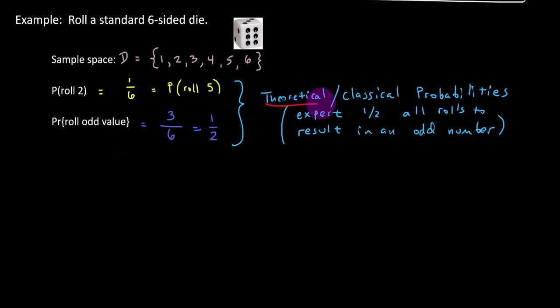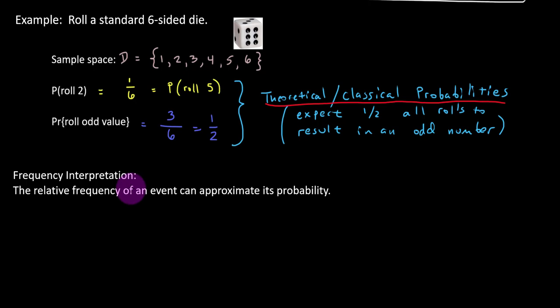Maybe that deserves an underline there. Theoretical or classical probabilities. So let's contrast this example with a frequency interpretation of probability where relative frequency can be used to approximate the probability of an event. Let's look at an example.